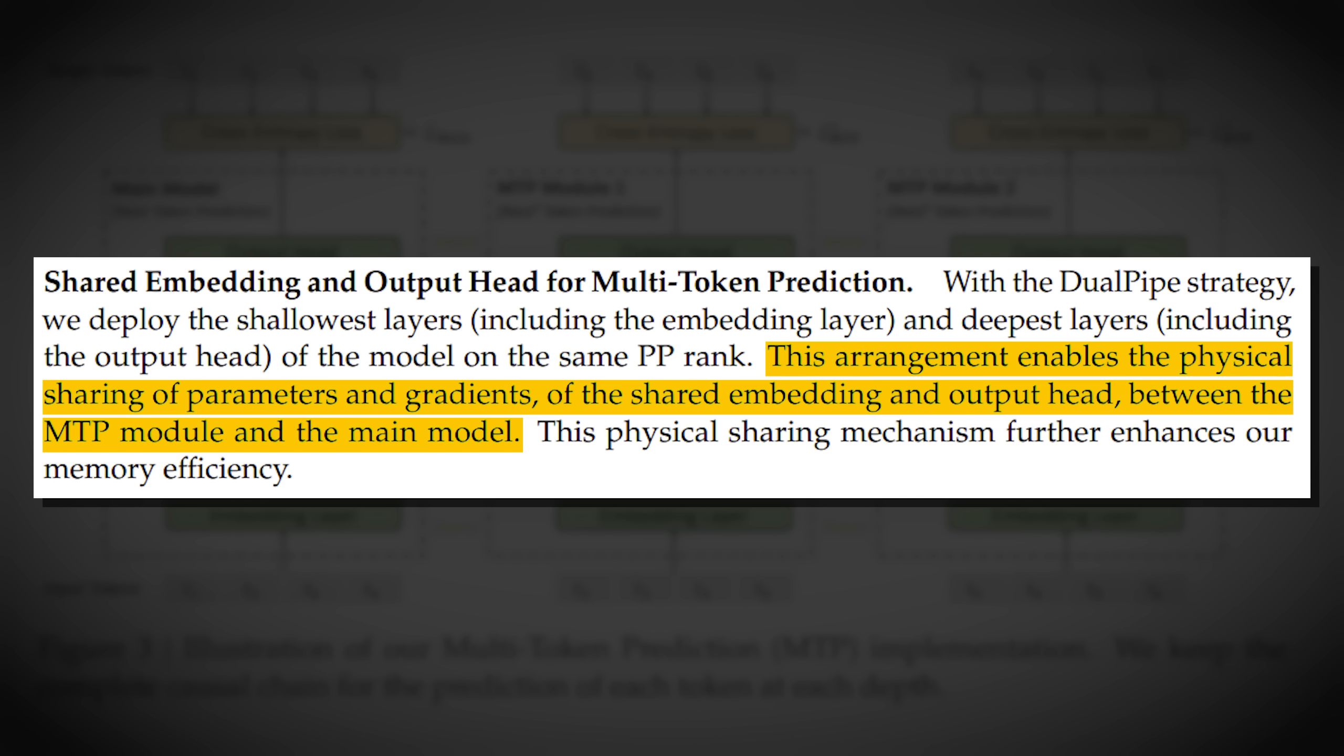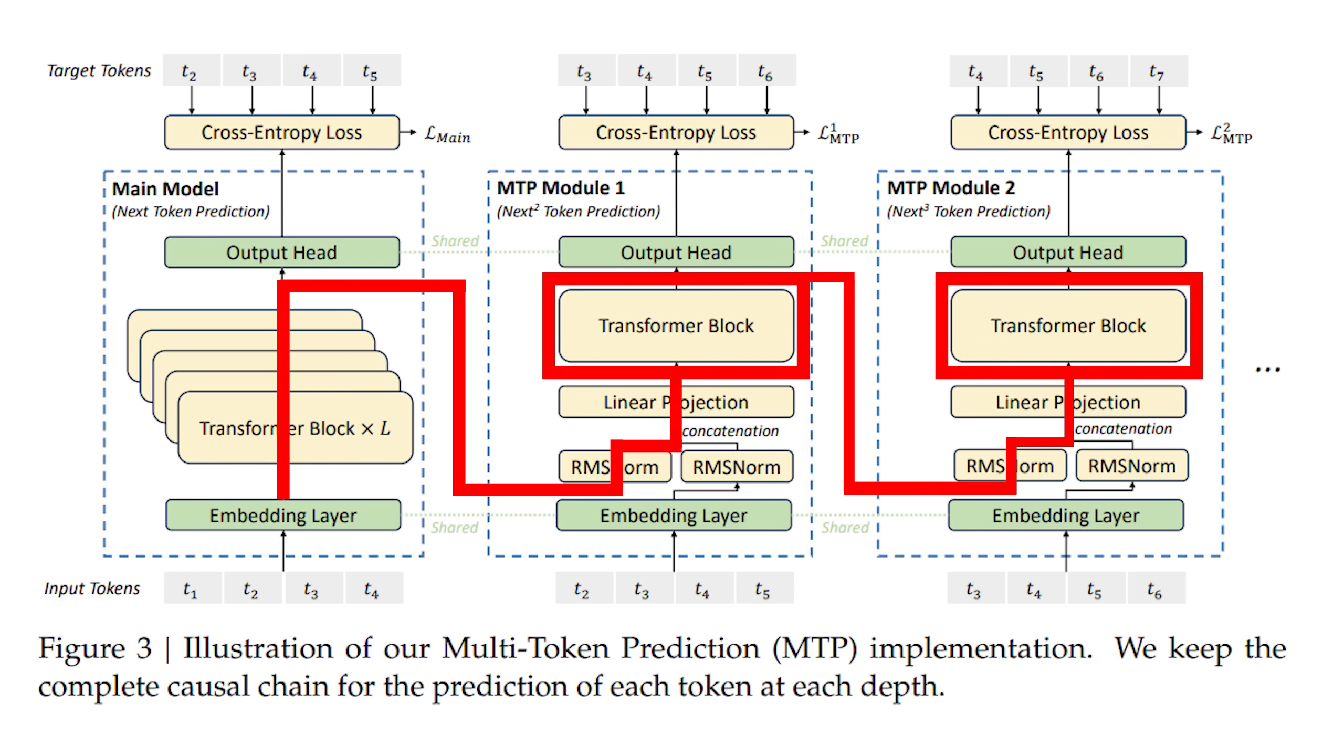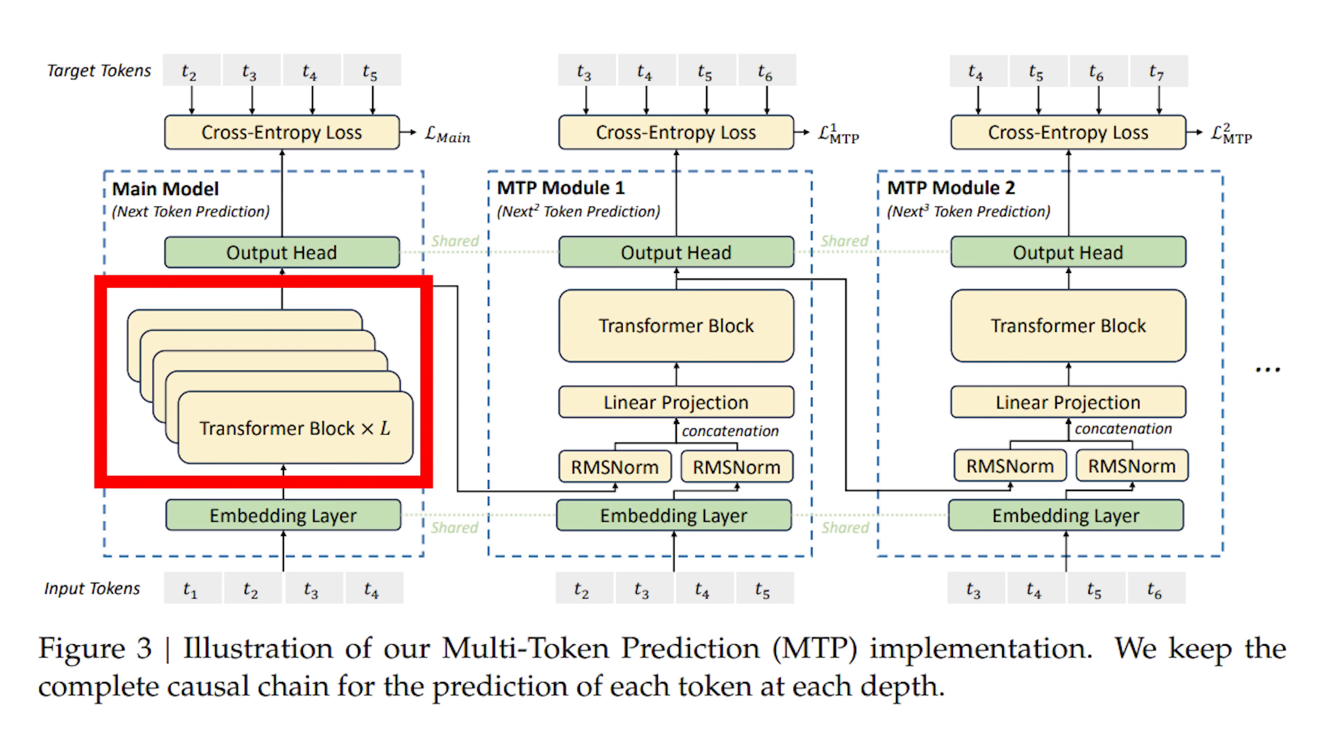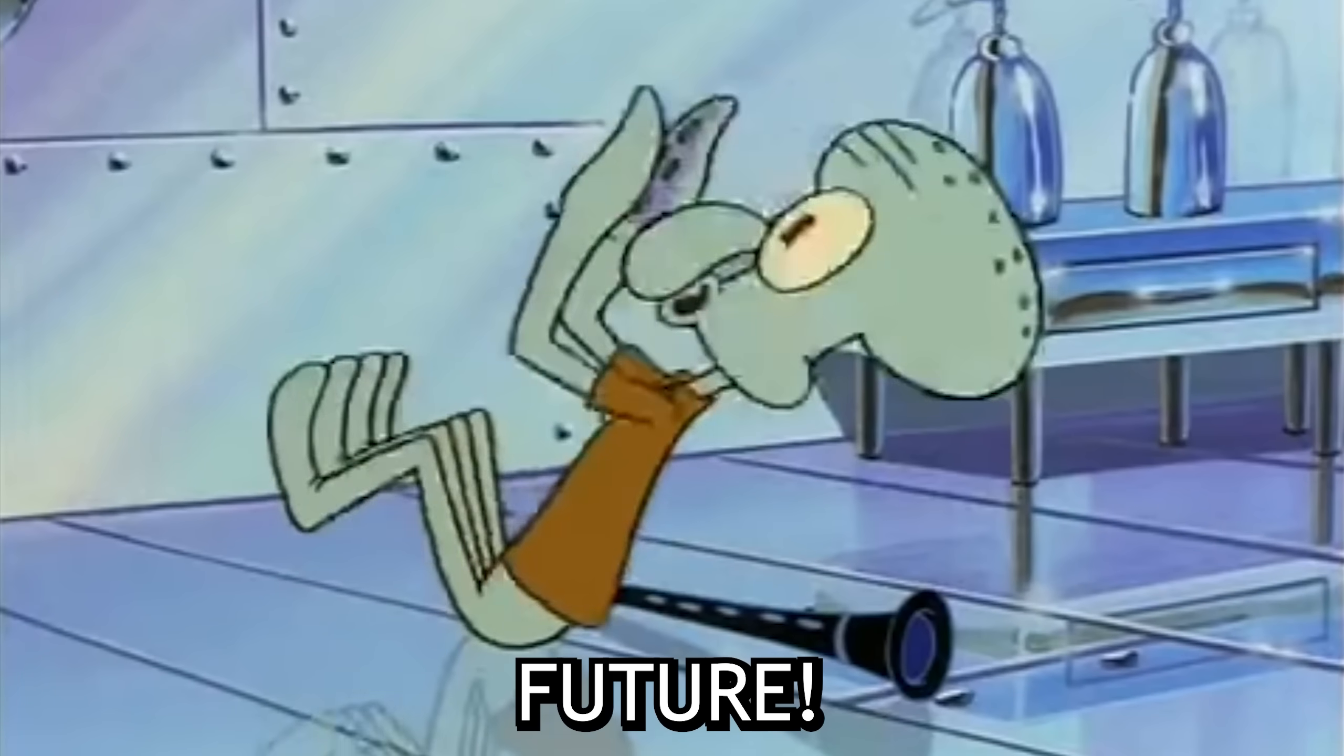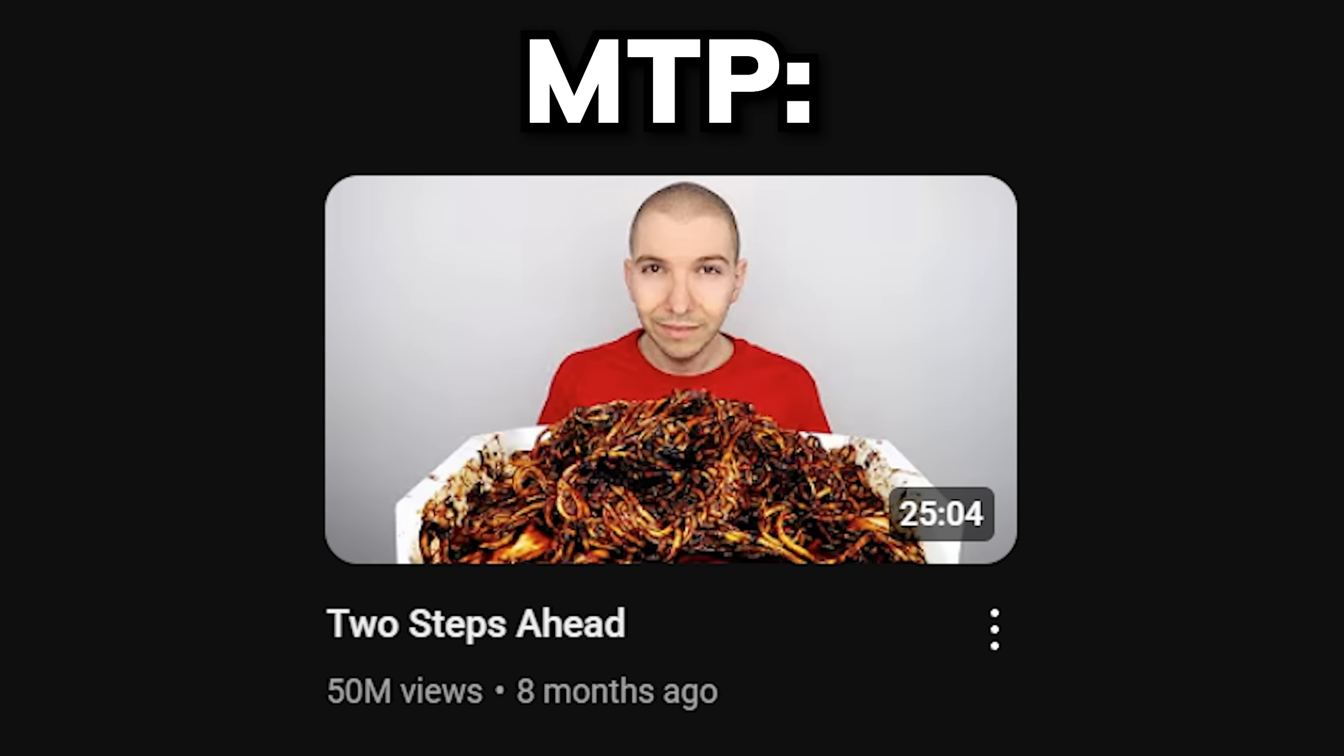The signals also flow back through the shared components like the output head and the transformer trunk that produced the initial hidden state H0. So this training setup for DeepSeek V3 explicitly forces the model to develop richer representations that capture longer-range foresights, which would theoretically make the model have better pre-planning capabilities.